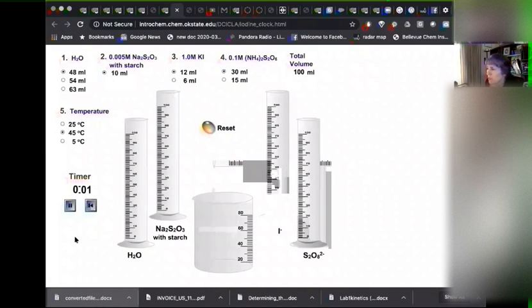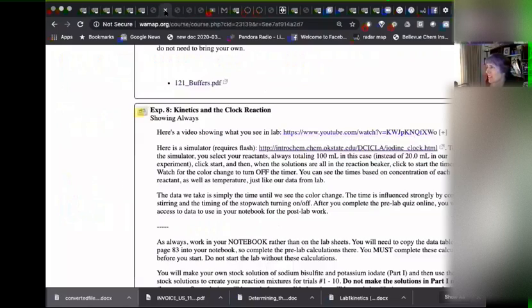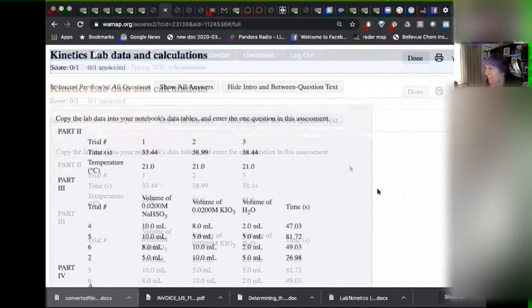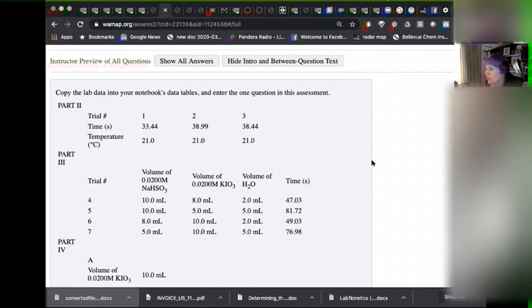All right. And stirring, stirring, stirring. In the lab, you just have to stir the whole time. Whoa. So that one went really fast. So we see the same kind of thing in our data here. All right. This is the data you should write down. So copy this data into your notebook. And then there's one question in this to give a point for getting the data.